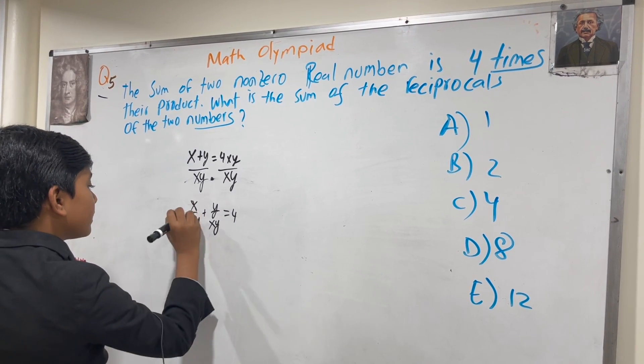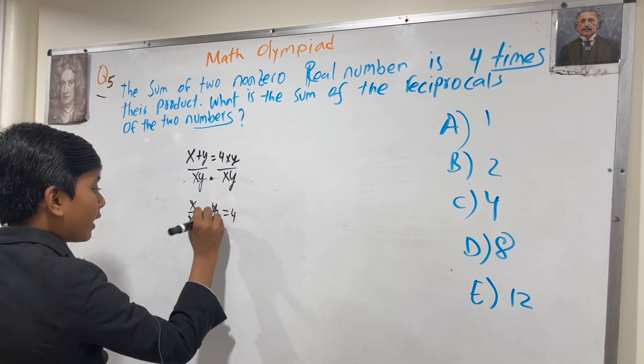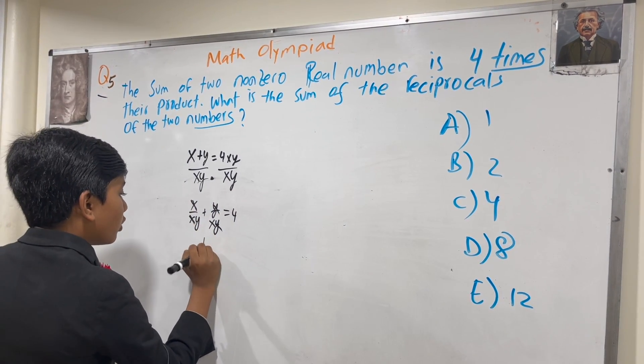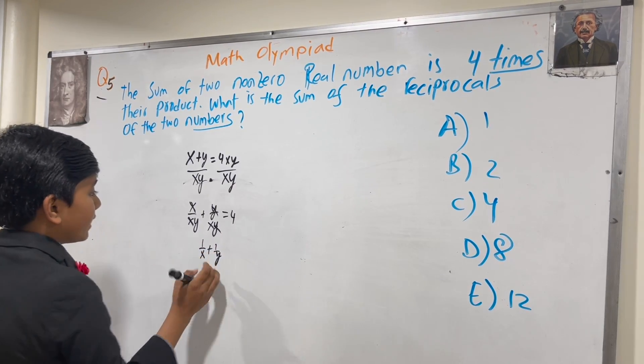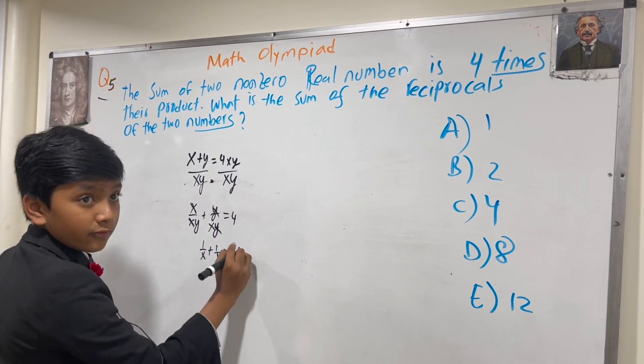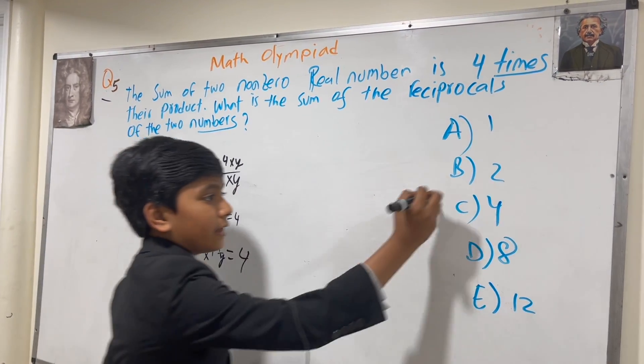X cancels X, Y cancels Y. So 1 over X plus 1 over Y equals 4. That's it.